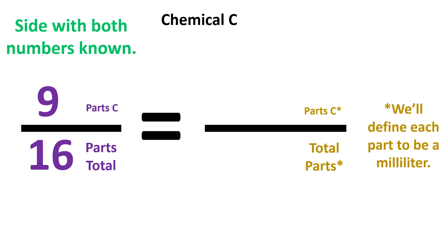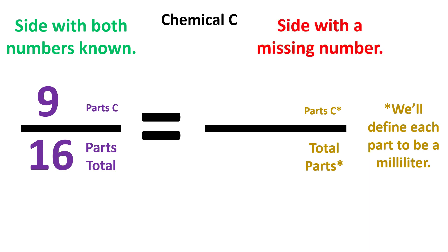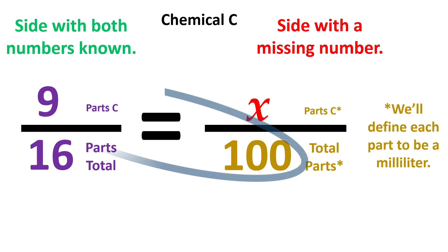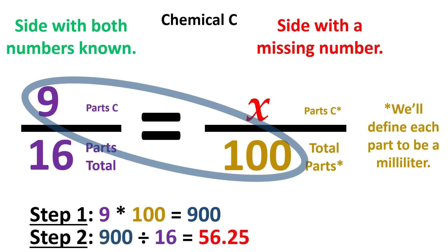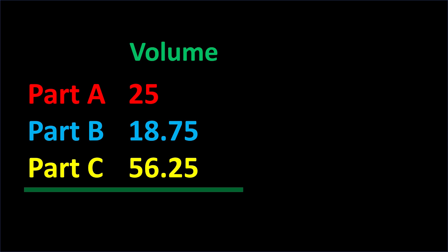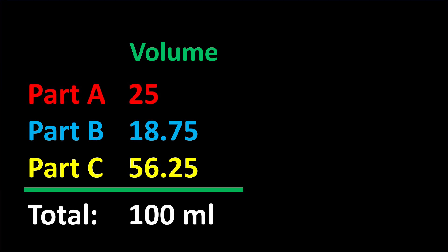For chemical C, the left side of the equal sign will be 9 over 16 and the right is X over 100. Step 1 is to multiply 9 and 100, which gives us 900. Step 2 is to divide our new product of 900 by the remaining number, which is 16. This equals 56.25 milliliters. We can confirm our answers by adding the volumes, which gives a total of 100 milliliters, and the volumes are in the ratio of 4 to 3 to 9.